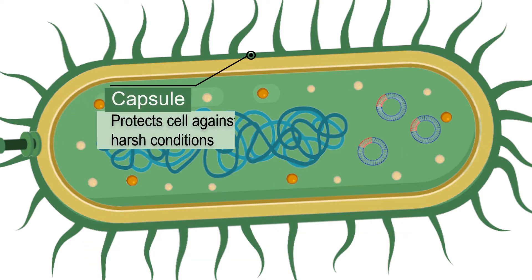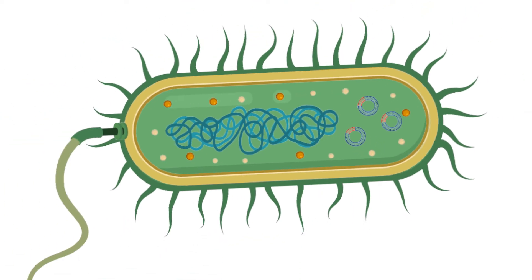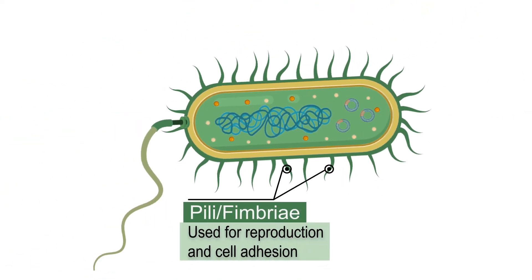Next is the capsule, which is the outermost protective covering of the bacterial cell, serving as a shield against very harsh conditions. The pili or fimbriae are hair-like hollow structures made of proteins found on the surface of bacteria. Through the use of the pili, bacteria are able to attach themselves onto surfaces.